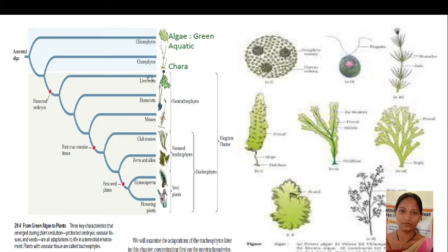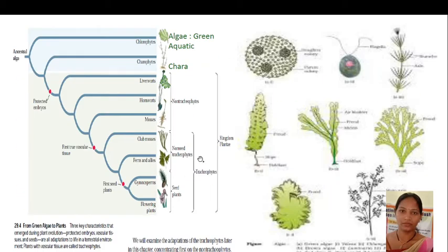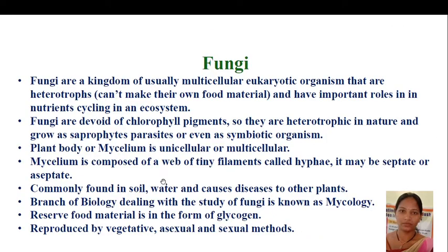Chara can develop as a multicellular branched alga, and protected embryo development started in evolutionary history. From there developed liverworts such as Anthoceros and Marchantia, then mosses such as Funaria. Further evolution led to the first vascular plants — club mosses and fern-like plants, which are pteridophytes — and ultimately flowering plants including gymnosperms and angiosperms. Examples shown include Volvox, Chlamydomonas, and Chara.